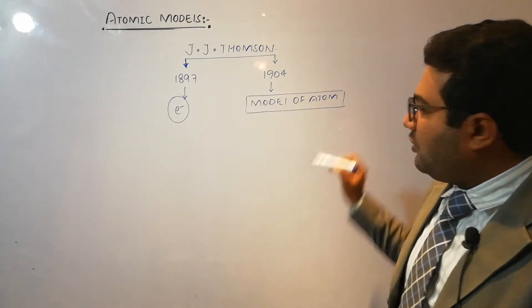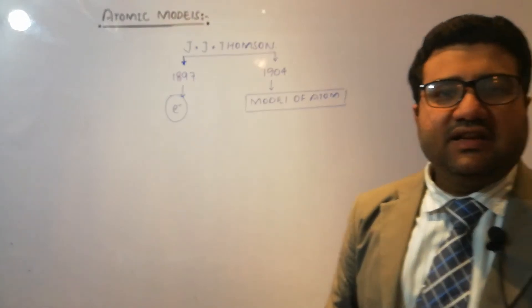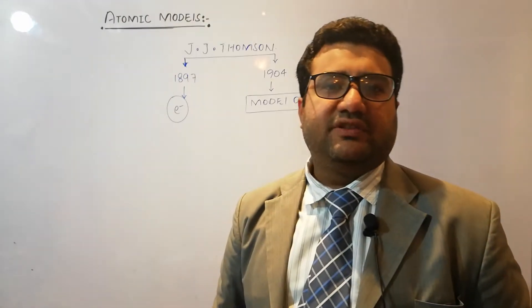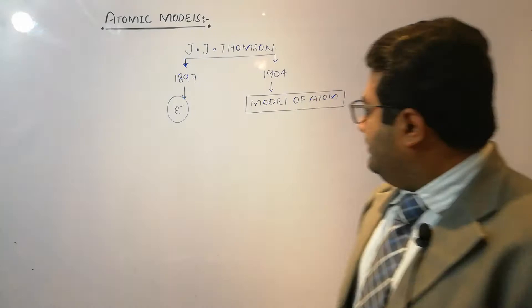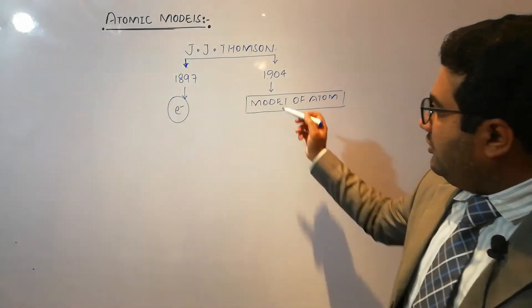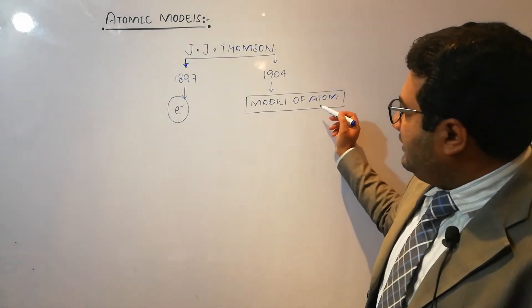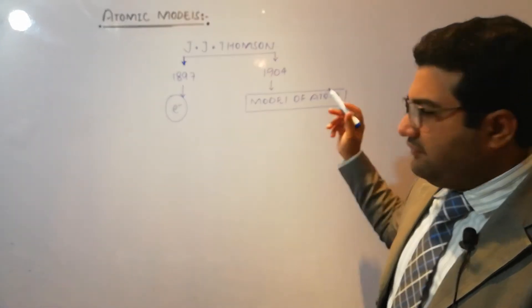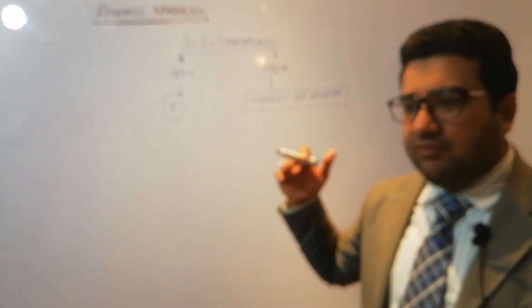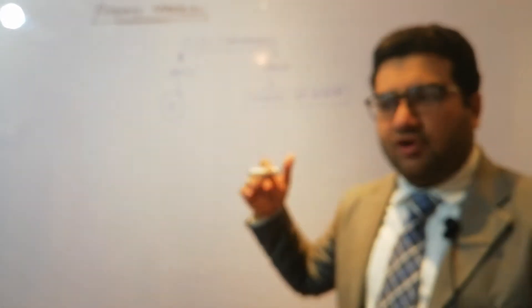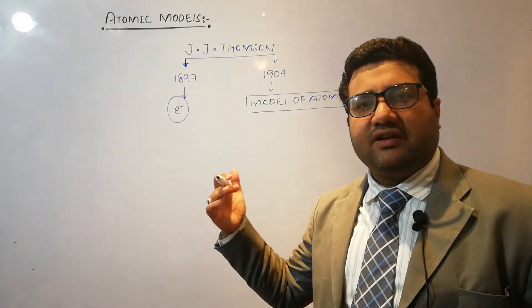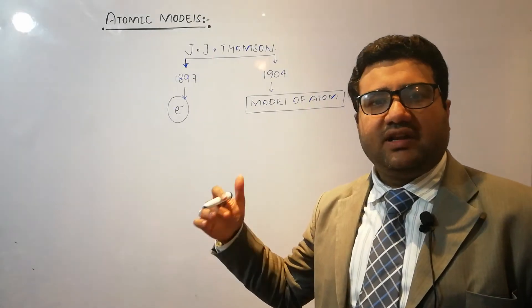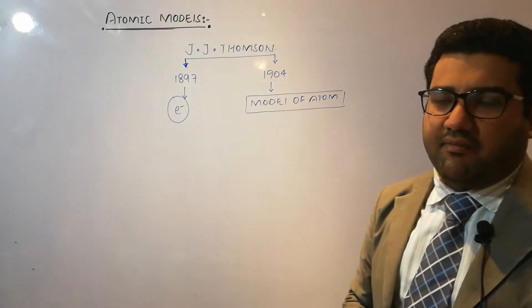A model is basically a visual display of an idea. So a model of the atom is a way to visualize how the distribution of electrons and particles exists within the atom.